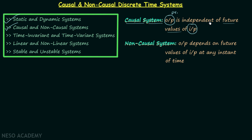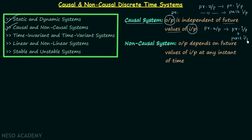According to this condition, the present output may depend on the present input, or it may depend on the past input — in both cases we have a causal system. The present output may also depend on both the present input and the past input. But if at any one instant of time the present output is depending on a future value of input, then the system will not be causal; it will become a non-causal system.